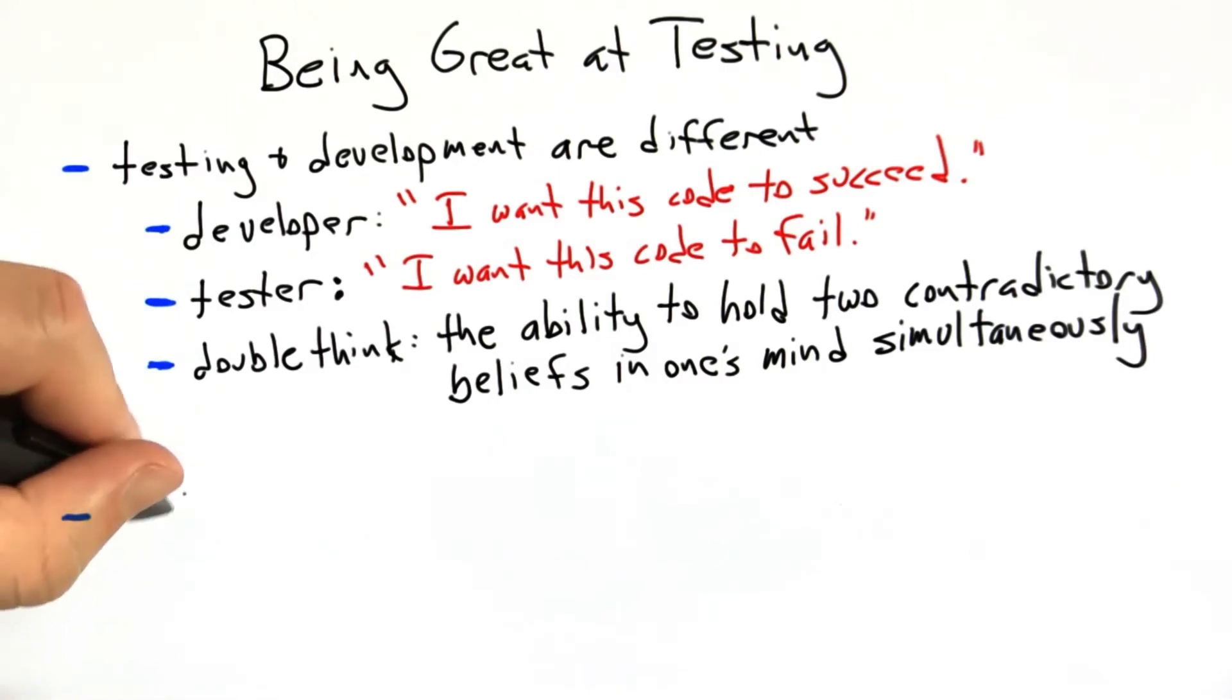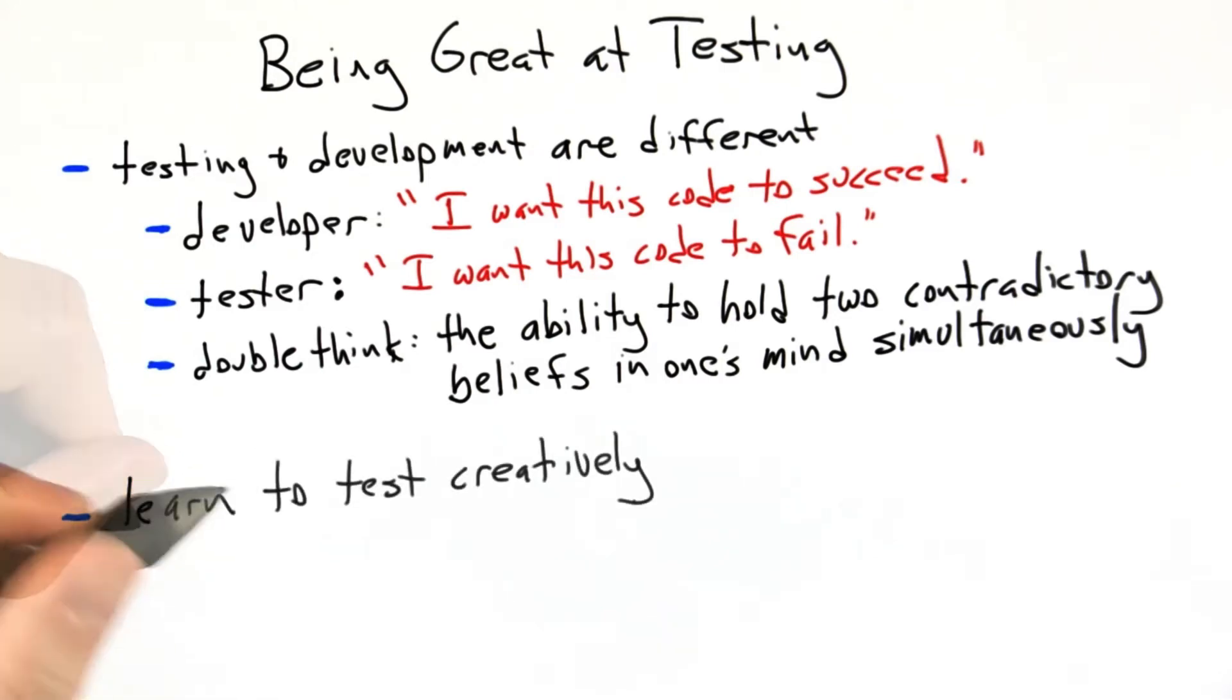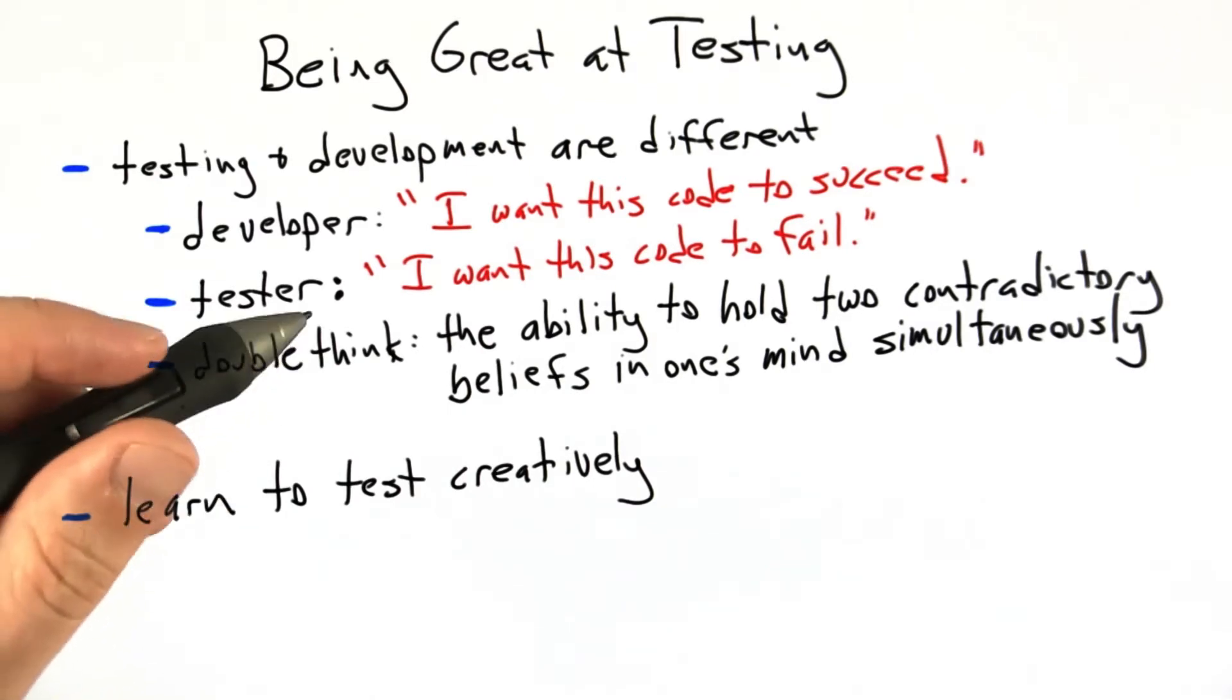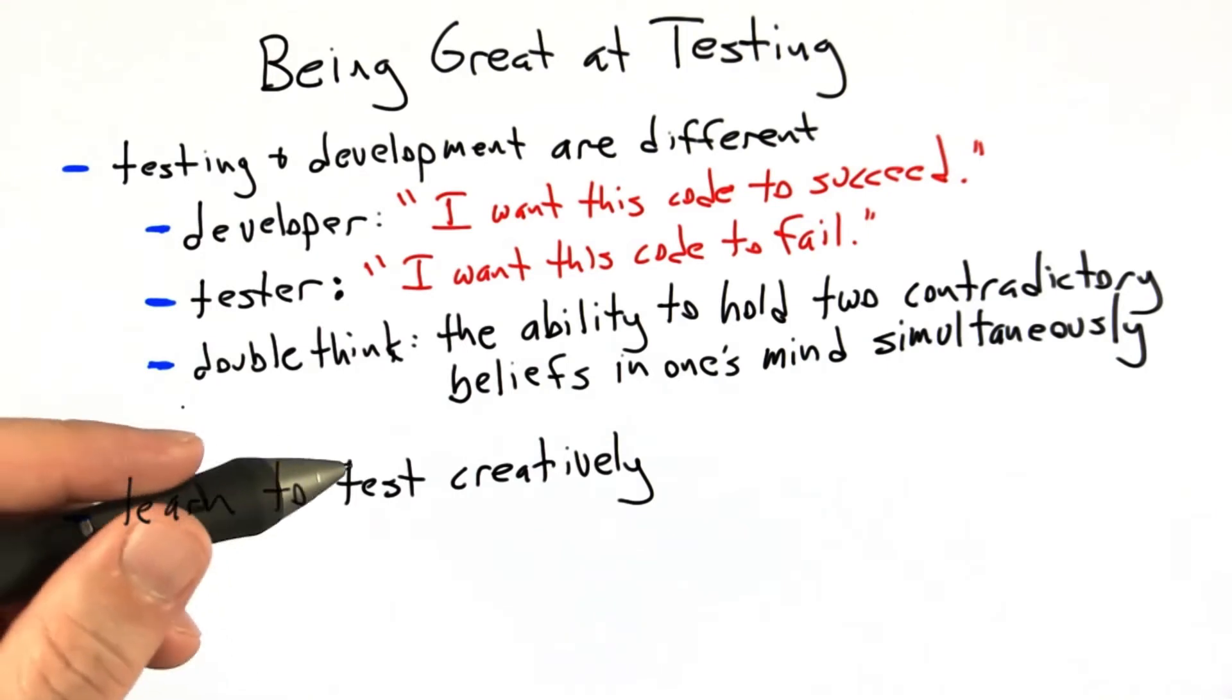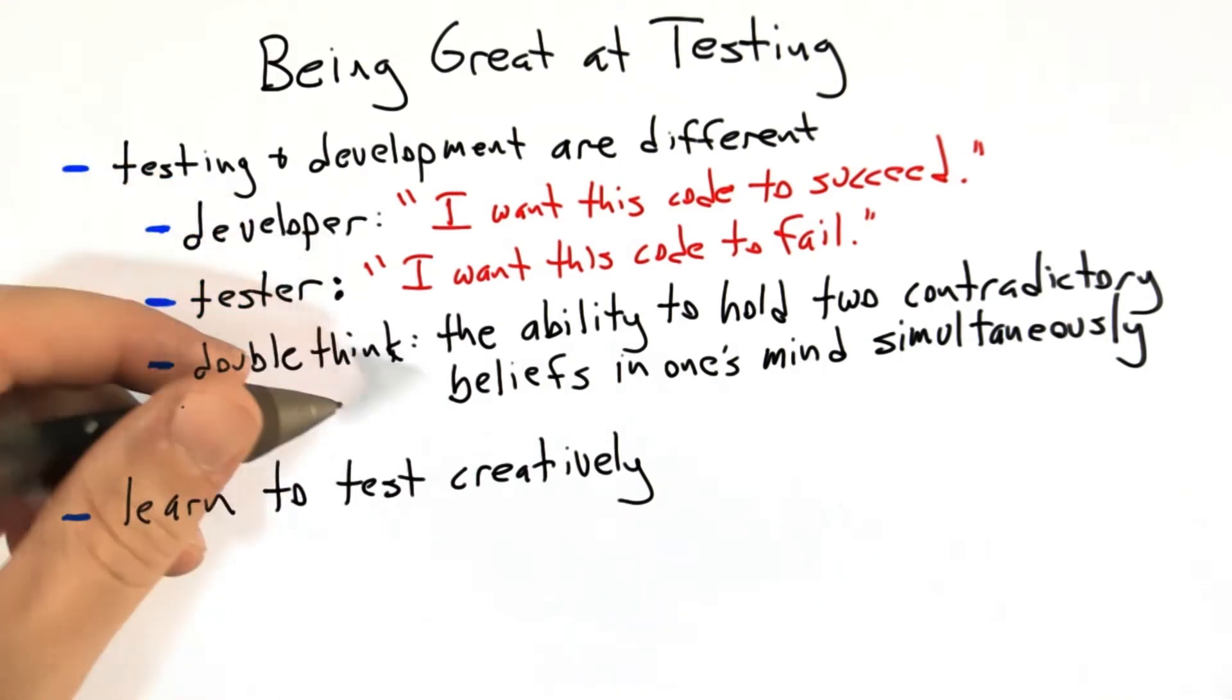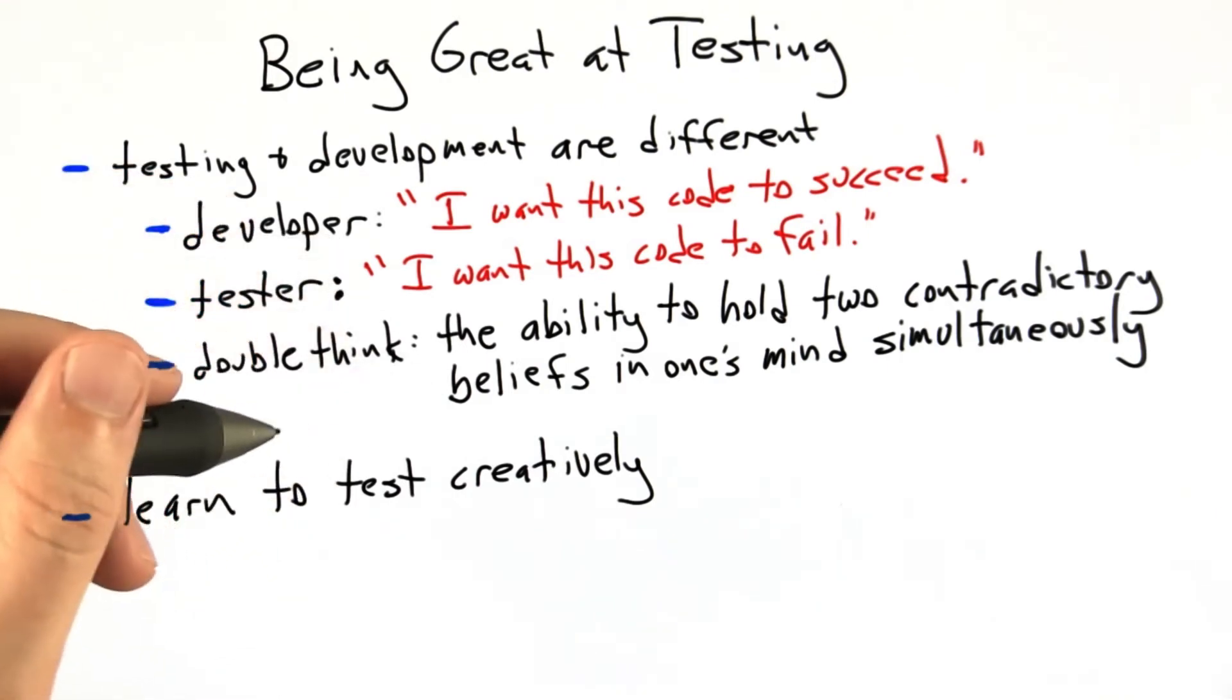The second element of being great at testing is to learn to test creatively. I showed the example earlier of testing an ARM assembler and disassembler by exploiting the fact that they were inverses of each other and also exploiting the fact that the ARM instruction space could be fully enumerated. That's something I consider to be a great example of creative testing.